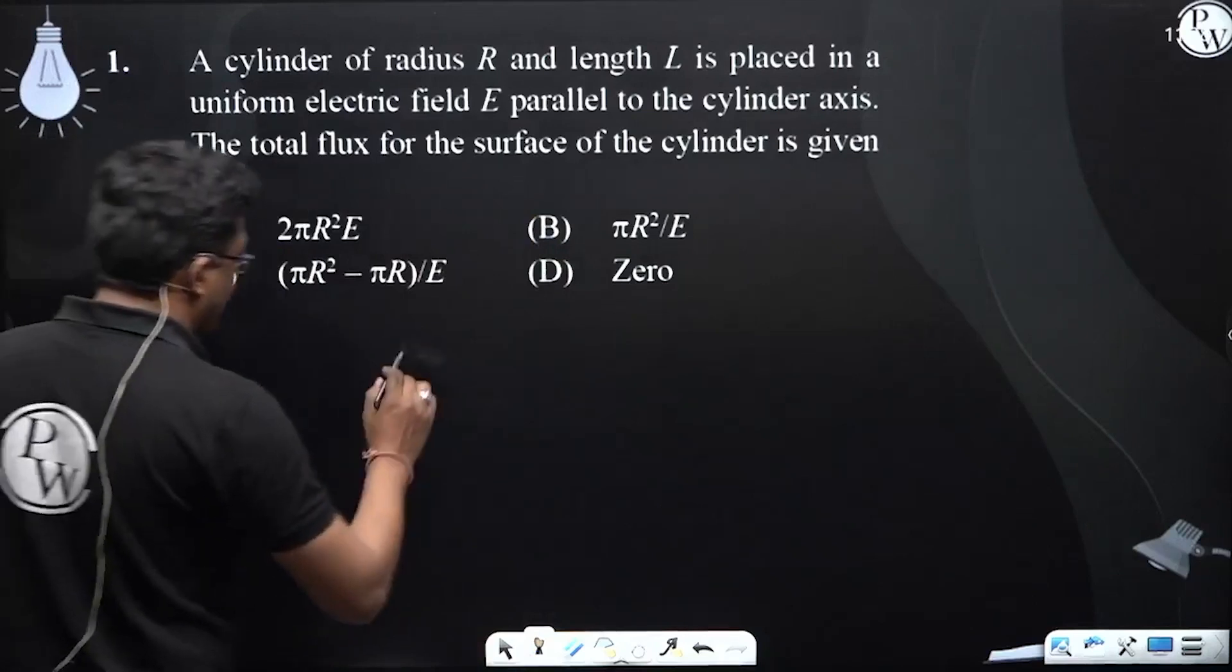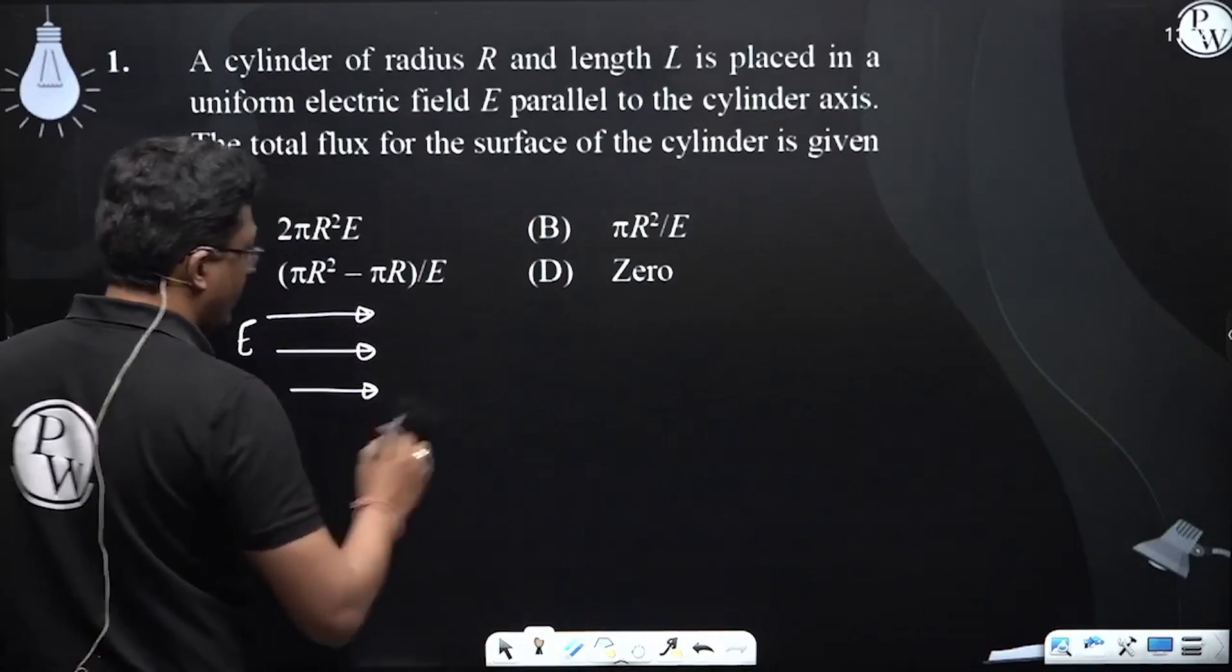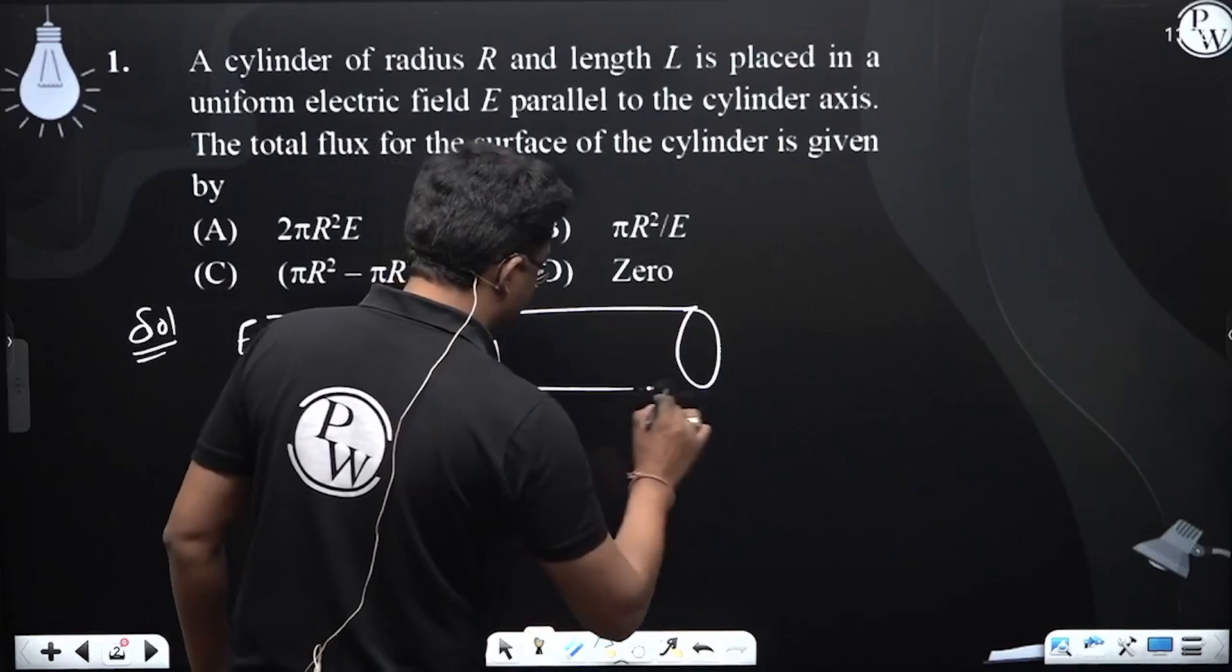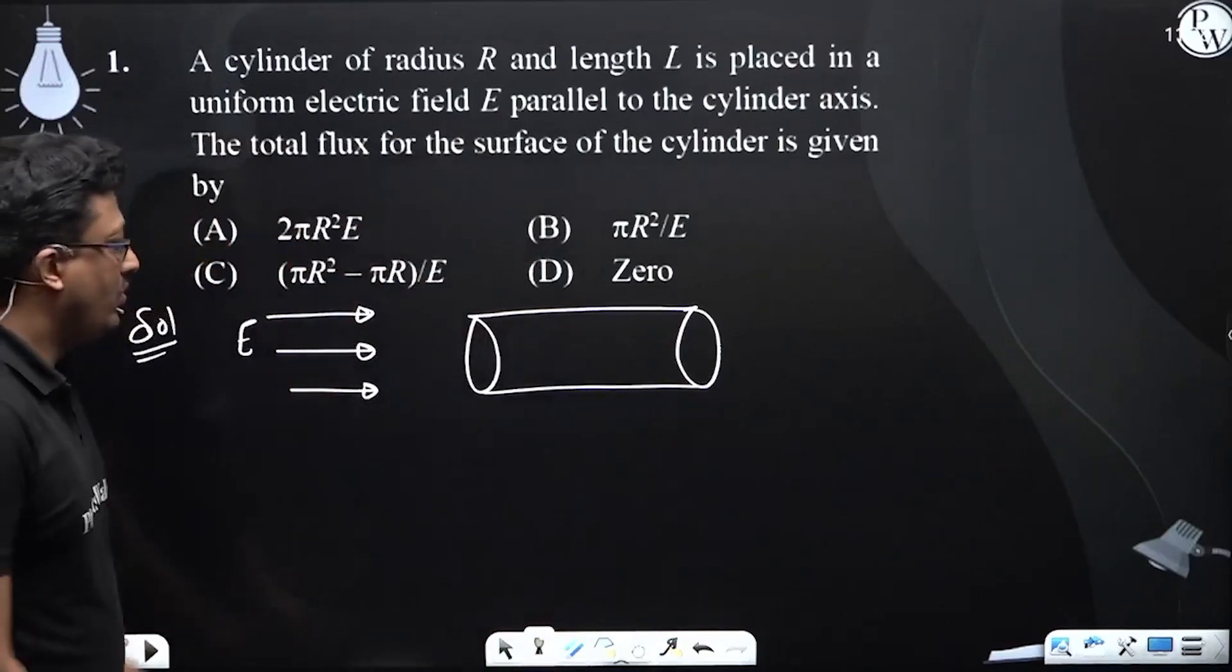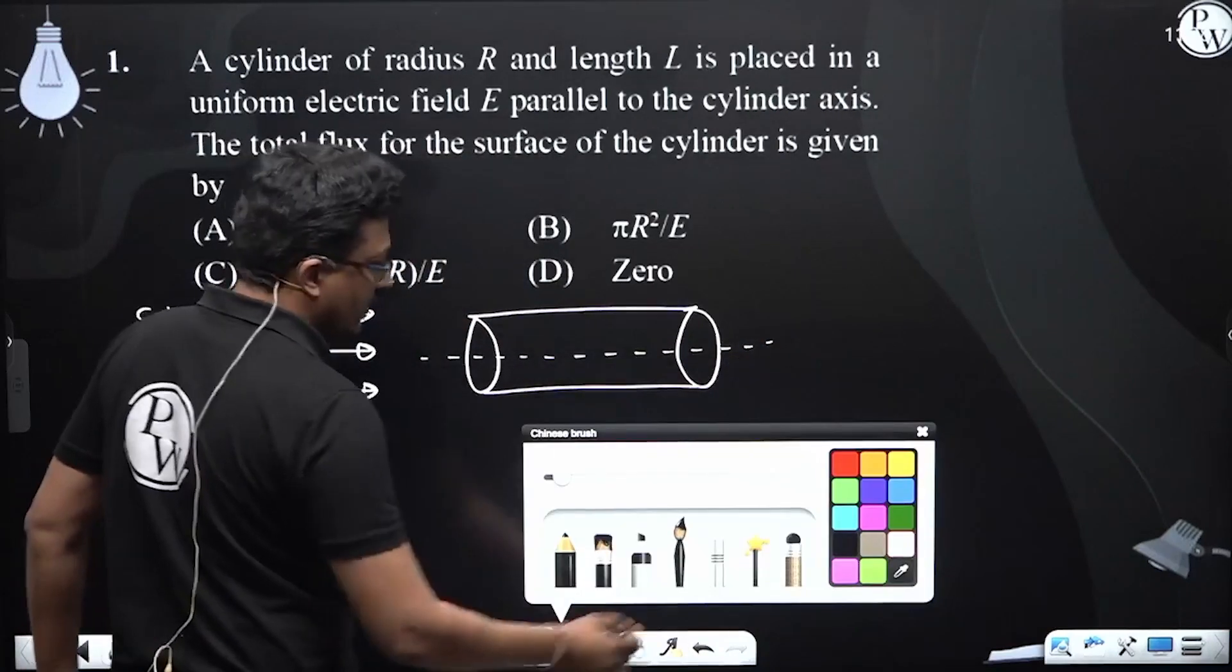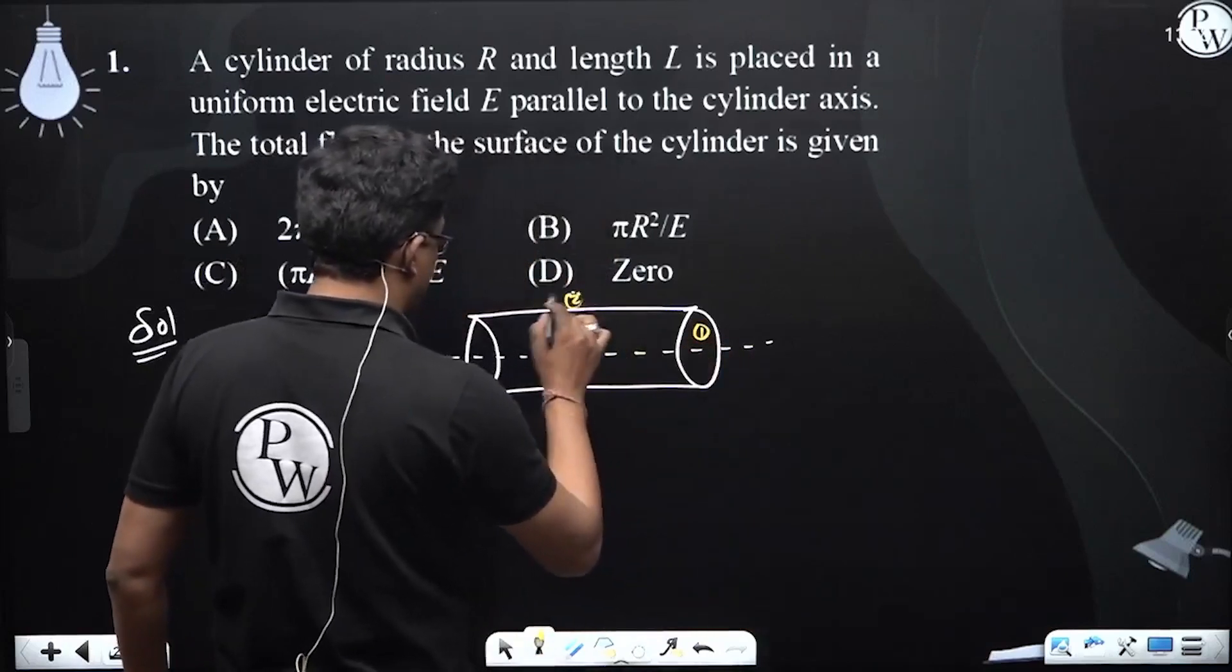So considering that electric field is directed in this direction, and there is a cylinder placed. Now, this is the axis of the cylinder. And we all know that it is having three surfaces, 1, 2, and 3.